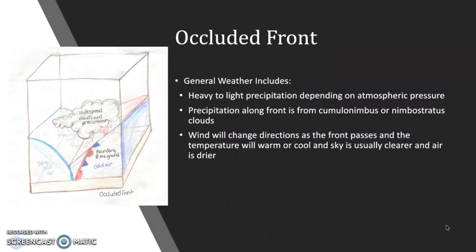Now we have an occluded front. This usually produces heavy to light precipitation depending on atmospheric pressure, typically associated with cumulonimbus or nimbostratus clouds. The wind will change directions as the front passes and the temperature will either warm or cool. Afterward, the sky will usually be clear and the air will be drier.